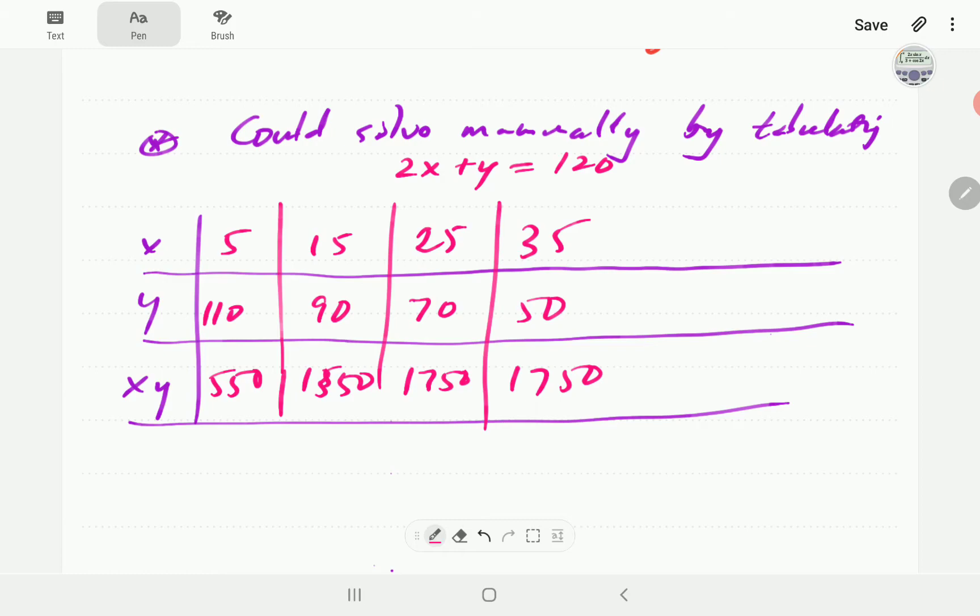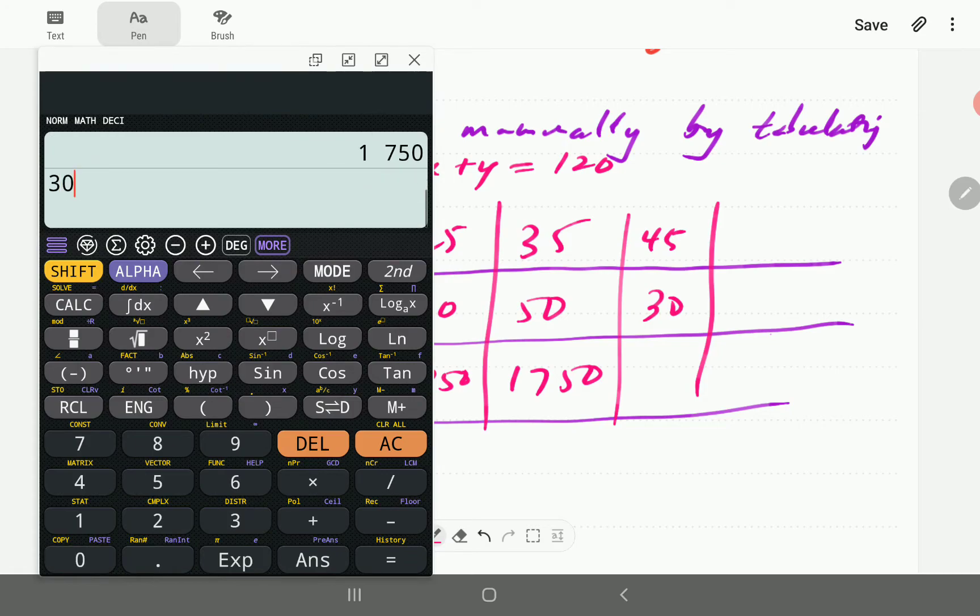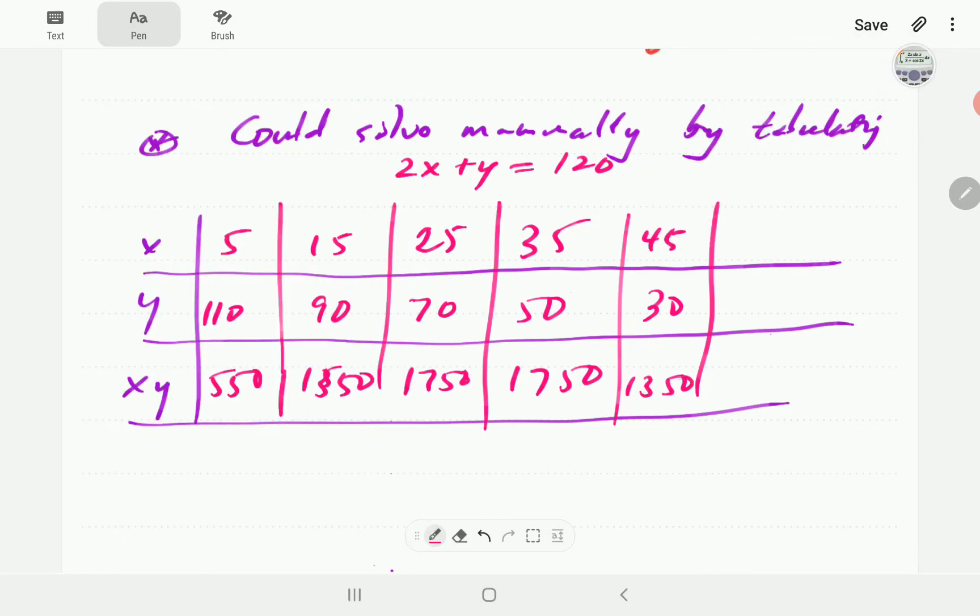Let's go to x equals 35. When x is 35, 2 times x is 70, and 120 minus 70 is 50, so 50 times 35 is 1750, which is the same value as we got for 25. So it looks like the values are leveling off now. Let's see what happens for 45. 45 times 2 is 90, take away 90 from 120 we've got 30, so 30 times 45 is 1350, which is exactly the same as this value we got here.